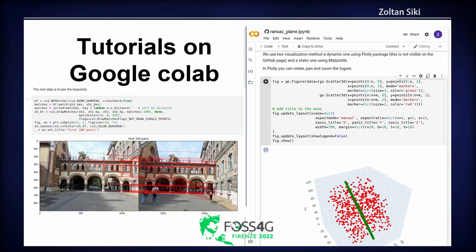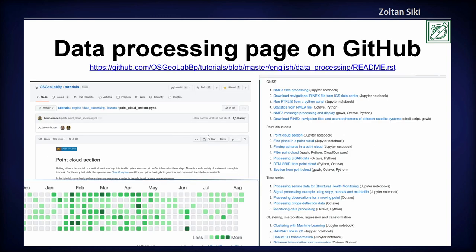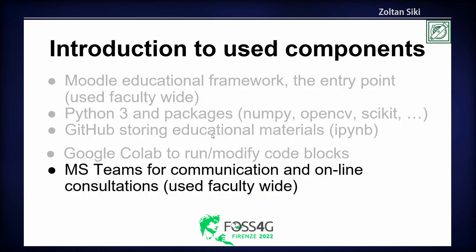Google Colab is a good tool. This is a picture from Google Colab — students can try it, can change the code, and there's no need to type in the code. We wasted a lot of time before, forcing students to type in code and finding each student's different typing mistakes — that took a lot of time, unfortunately. We also use Microsoft Teams, which is used faculty-wide for consultation, questions and answers, and online personal consultations.